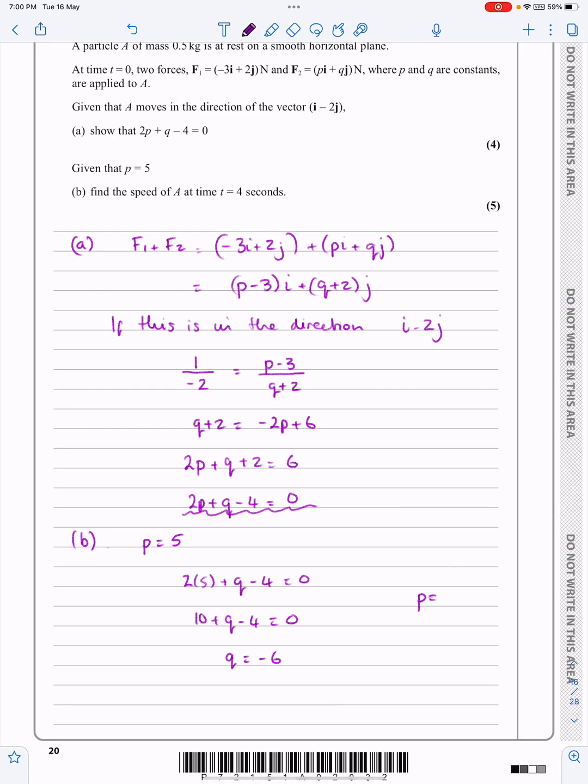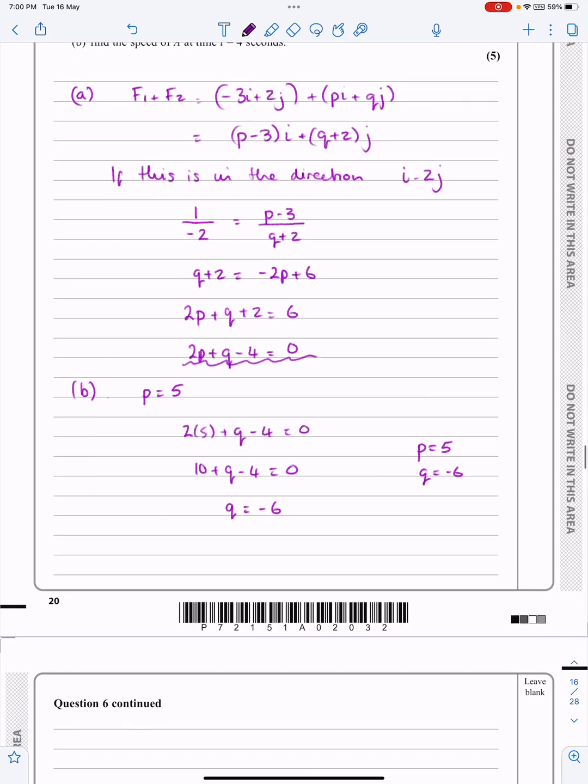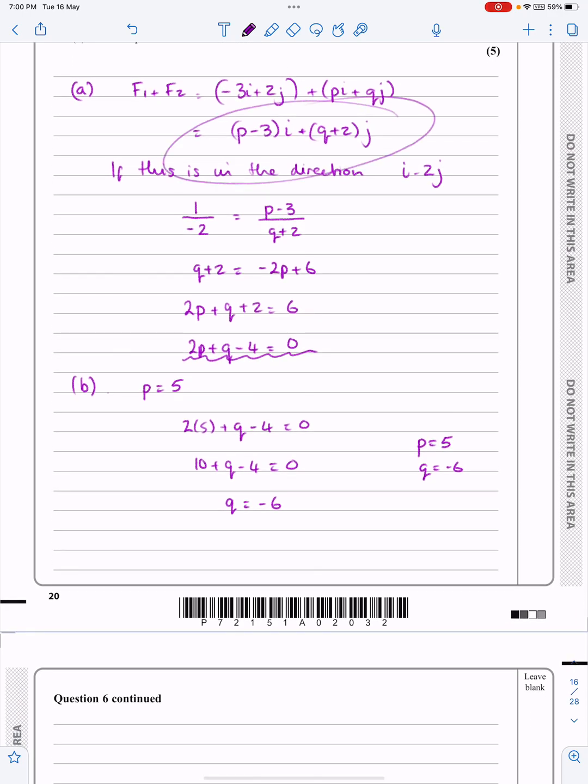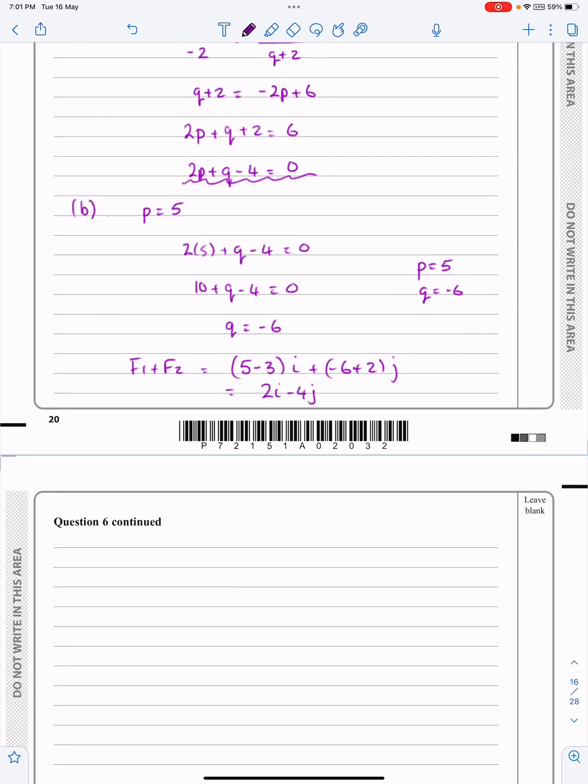So I've now got P is 5 and Q is minus 6. So what that means is I can go back and work out at the top there, I can work out what the resultant force was. So let's do that. So F1 plus F2 then becomes P minus 3 lots of I. So 5 minus 3 lots of I plus Q plus 2, so that's minus 6 plus 2J. I get 2I minus 4J. OK, so that's the resultant.